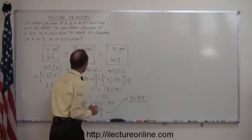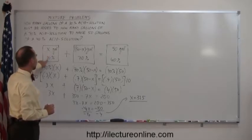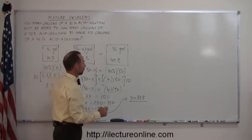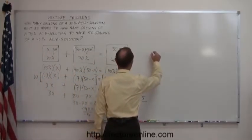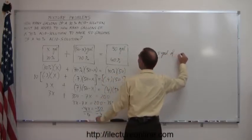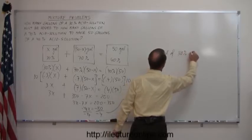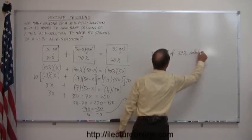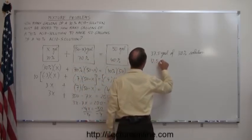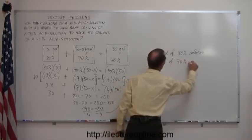I have the answer here. So, that tells me that I need 37 and a half gallons of this solution and 50 minus 37 and a half, which is 12 and a half, of this solution. So, the answer is, we need 37.5 gallons of the 30% solution. And we need 50 minus that, which is 12.5 gallons of 70% solution.